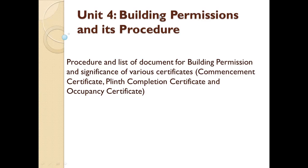After drawing the municipal building permission drawing, you have to make one application to the local authority for getting approval of that plan. Along with that application you have to attach the drawing and whatever required documents are there — maybe sadhara extracts, property card, various receipts of fees paid, taxes applied by the municipal corporation — all those things you have to submit in a bundle to the authority.